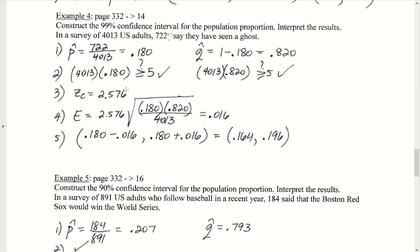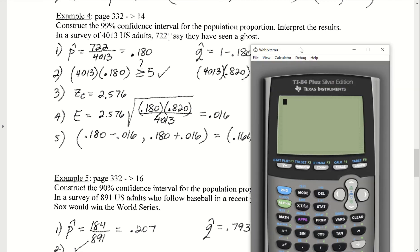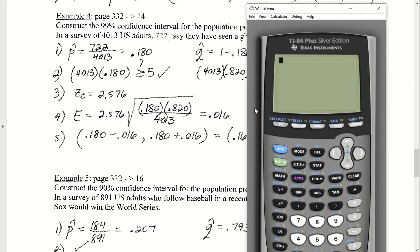The next thing we would need to compute would be the Z-score that we're going to need on our formula for E. Recall the formula for the margin of error for a population proportion is E equals ZC times the square root, and on the inside, it's p-hat times q-hat divided by N. We are looking for the 99% confidence interval, so to find the critical Z-score, we would do 2nd, distribution.